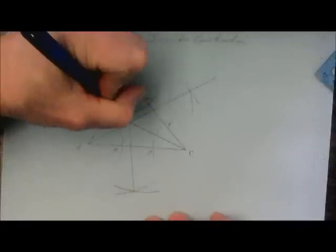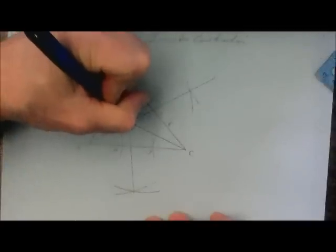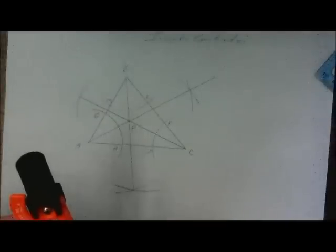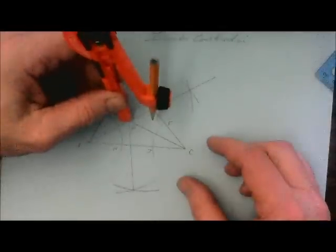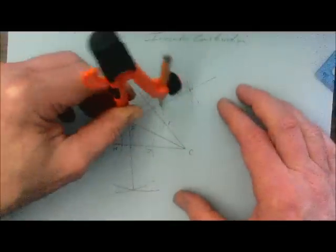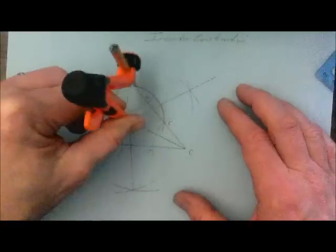Now the in-center is equidistant from all the sides, but none of the angle bisectors are necessarily perpendicular to the sides. So what I've got to do is one more quick construction, which is the construction of a point perpendicular to a line.